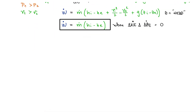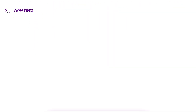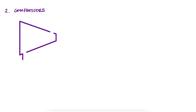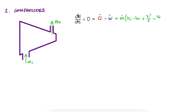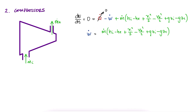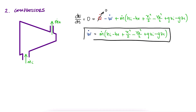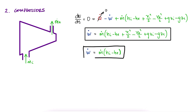For the compressor we have almost the exact opposite: a nozzle-type schematic, large inlet area and small exit, with mass flow coming in at the bottom and exiting at the top. We neglect the same terms as the turbine, and the work will result in the same exact expressions, with and without the kinetic energy and potential energy terms.